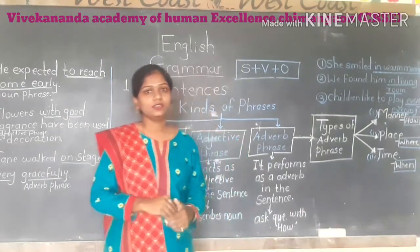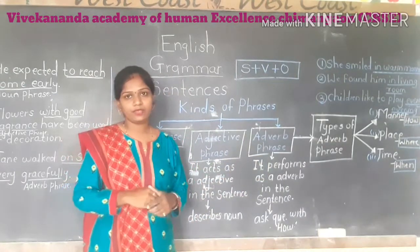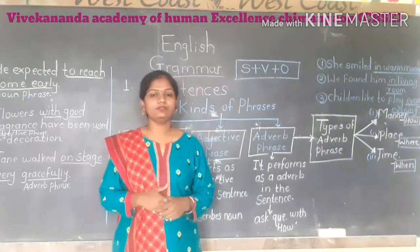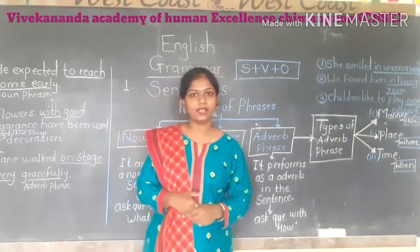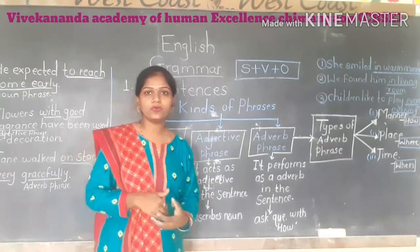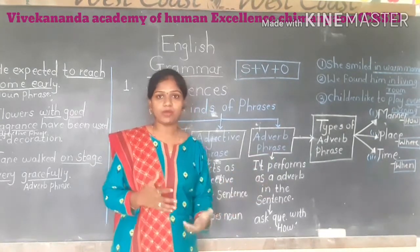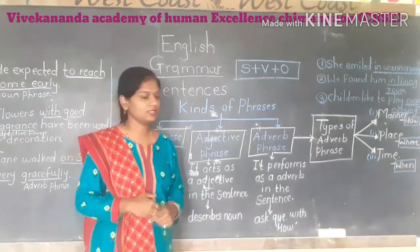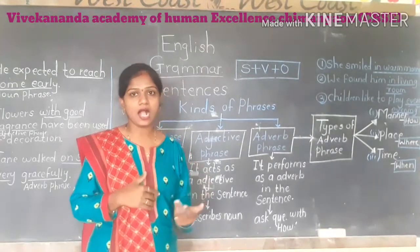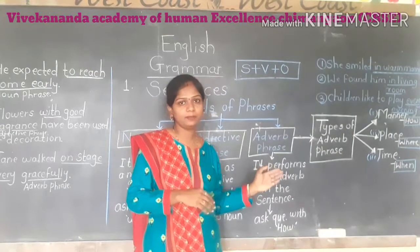Now we turn to the third type of phrase — the adverb phrase. An adverb gives more information about the verb. So in a given sentence, the group of words acting as an adverb is called the adverb phrase. To identify an adverb phrase, ask the question 'How?' to the verb — whichever answer you get will be your adverb phrase.